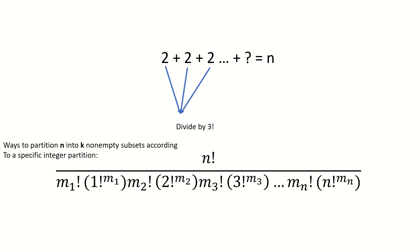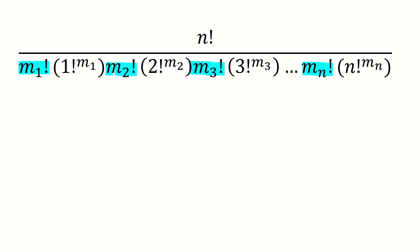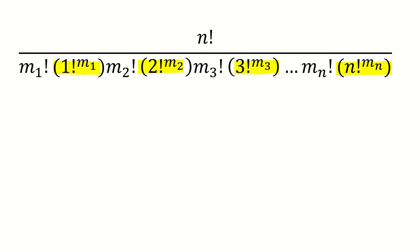With this, we can arrive at our final formula for counting the ways of partitioning a set of n distinct elements into k non-empty subsets according to a specific integer partition, where that specific integer partition is defined by the numbers m1 through mn telling us how many times 1, 2, 3, etc. appear in the partition of n, and where m1 through mn sum to k. The intuition is that the mj factorial terms prevent over-counting from permutations of same-size subsets, while the j factorial terms in the denominator prevent over-counting from permutations of individual elements within each subset.